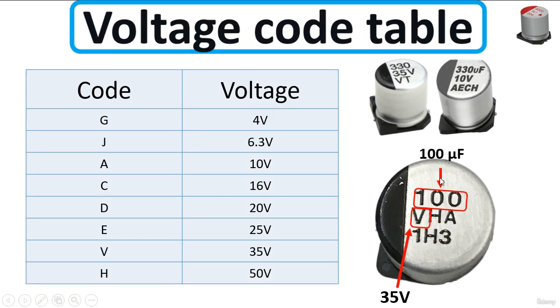So as you can see here, for example, we have these two capacitors where we have the code or the value of the capacitance and the voltage clear and evident. And for example, we have this kind of capacitor. So we have here 100. This is clear.